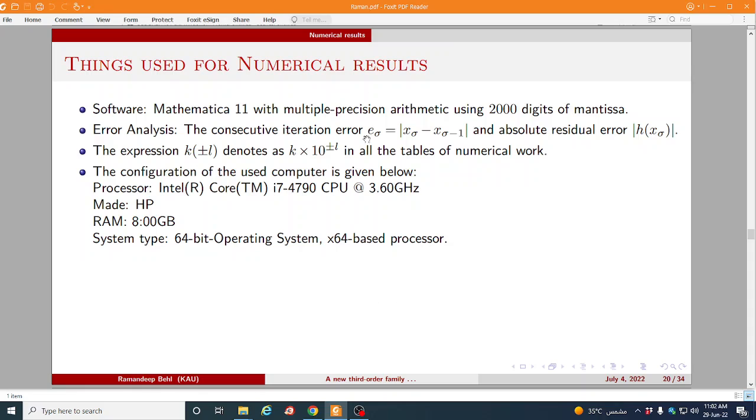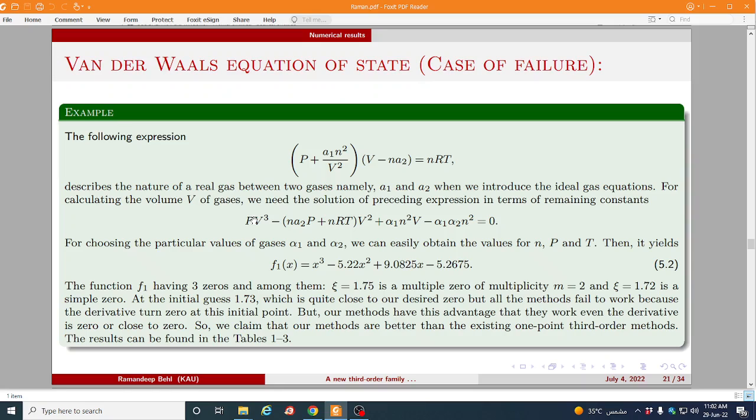These are the things which we used for the numerical results. We use Mathematica 11. The meaning of ε means error between two successive iteration, absolute residual error, this mean k times h power plus minus n. These are the configuration of our system.